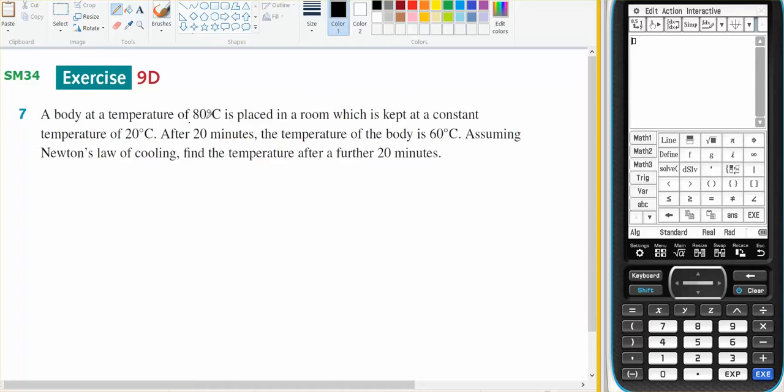A body at temperature 80, so when T equals zero, the temperature equals 80, placed in a room which gives a constant temperature of 20. After 20 minutes, so when T equals 20, the temperature of the body is equal to 60. Find the temperature after a further 20 minutes, so find T when T equals 40.